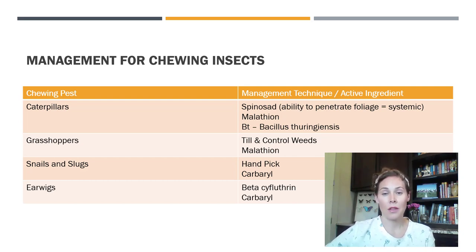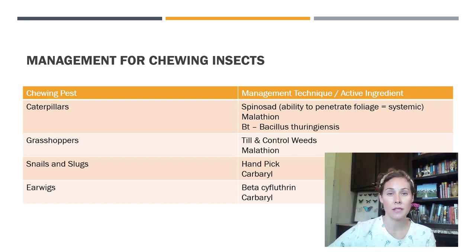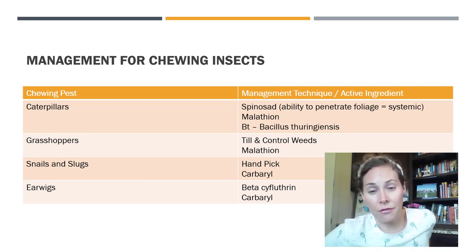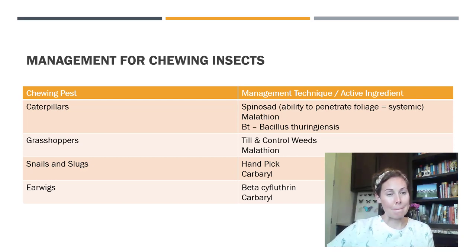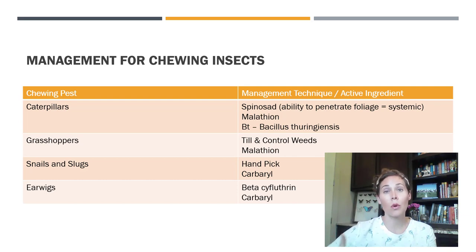For grasshoppers, malathion is a good option, but also till the soil and control weeds to reduce the areas where they like to hang out and lay eggs, which reduces the population coming into your citrus plants. For snails and slugs, you can hand-pick them off; carbaryl in liquid form can be effective as well, but hand picking is best, along with reducing excess moisture in the soil. Earwigs are rarely a problem for backyard growers — mainly an issue in commercial settings. If they are a problem, beta-cyfluthrin (a synthetic pyrethroid) and carbaryl products like Sevin are options.